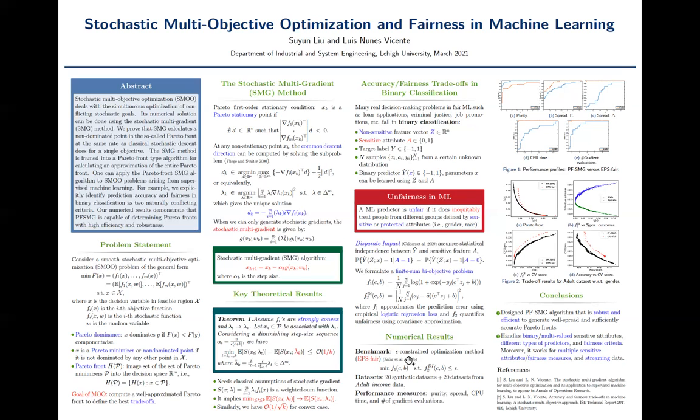And we compare the results of our algorithm with the benchmark method called epsilon constraint optimization method. In the epsilon constraint model, we just take the fairness objective as a constraint. So by varying the upper bound epsilon here, we can get a benchmark for the Pareto front.